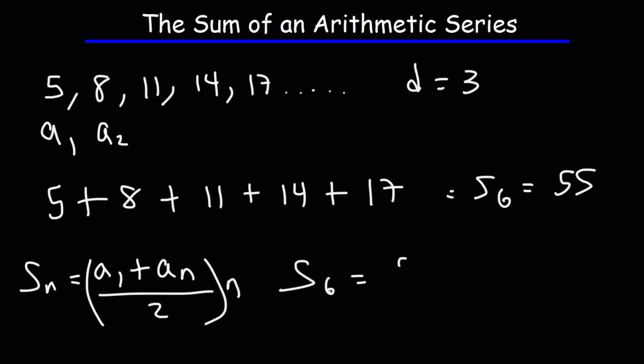The first term is 5. The last term in this sequence a6. Actually I take that back, that's a sub 5 rather. We're adding 5 terms not 6. Mistakes happen but it's good to catch them. So the fifth term, that's 17 divided by 2, and then times n. n is 5.